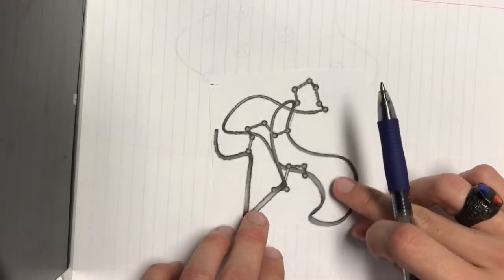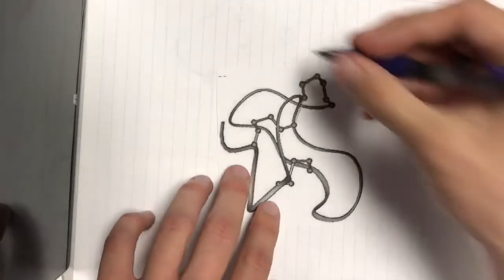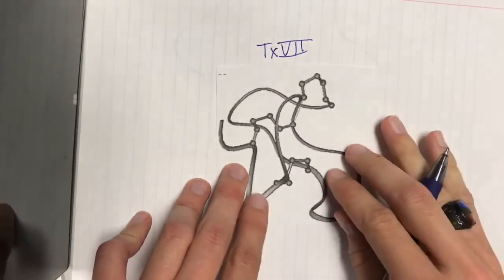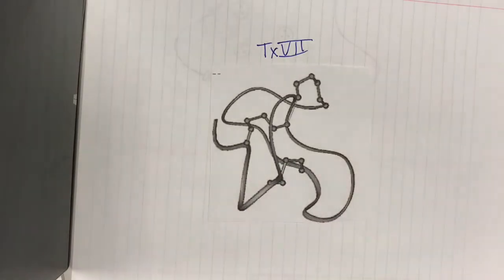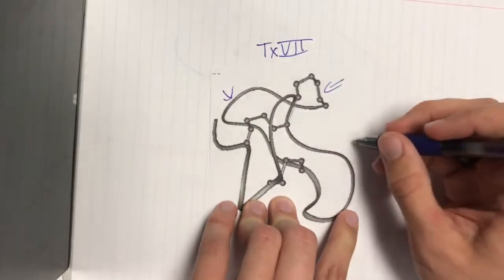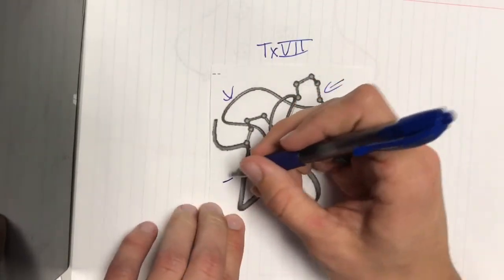This is TX7, the particular conotoxin that we are focusing on. So, as you can tell, there's a four-loop structure that it has. This is characteristic of most conotoxins.